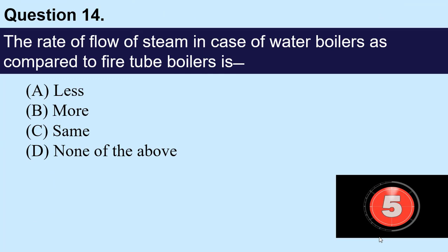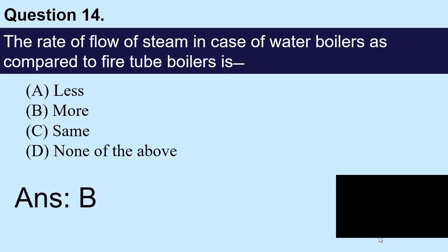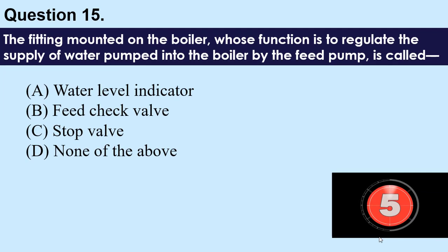Question number 14: The rate of flow of steam in case of water tube boilers as compared to fire tube boilers is — A) less, B) more, C) same, D) none of the above. The answer is B — more.